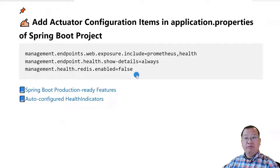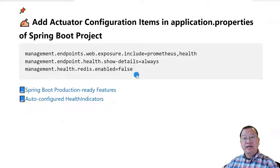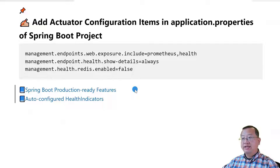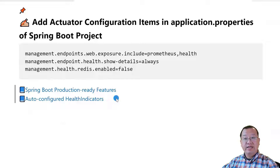There are 15 out-of-box health check indicators. I have to disable the Redis health check because my Spring Boot app does not use Redis. If I do not disable it, the health check status will show down. Also, there are two useful documents: Spring Boot production-ready features, and the auto-configured health indicators document, which includes the 15 out-of-box indicators and how to create new indicators yourself.